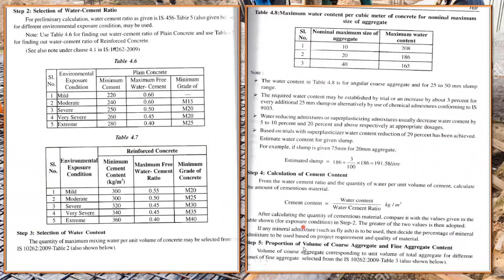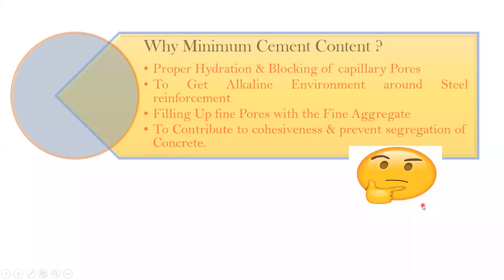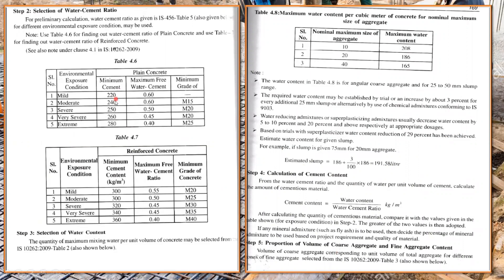Step five: Proportion of volumes of coarse and fine aggregate. We need to find these volumes next. The fine aggregate zone — whether zone 1, 2, 3, or 4 — must be identified. For a 20 mm maximum aggregate size, you check which zone the fine aggregate belongs to and take the corresponding value from the table. This will be clearer when we solve numerical problems.